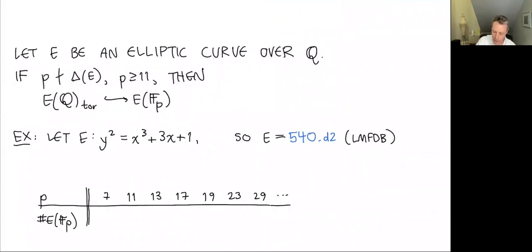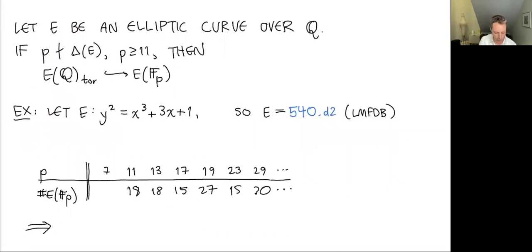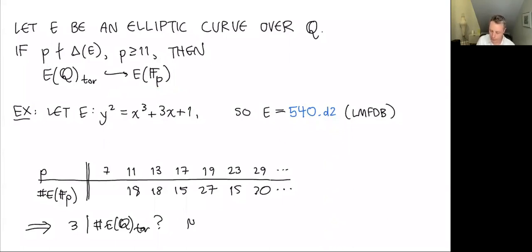What do you get if you count points on this elliptic curve modulo a couple of primes? Starting at 11, you get 18, 18, 15, 27, 15, 30, and so on. Pretty soon you notice a pattern: all of these point counts are divisible by 3. So you might ask, does that necessarily mean that 3 divides the number of torsion points of the elliptic curve? It's certainly allowed by the injective map. But the answer is no — this implication need not hold. It's too bad, because otherwise this would be a really nice way to detect torsion.